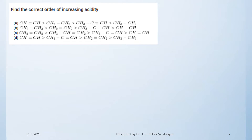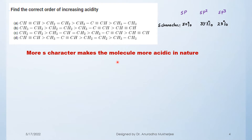The third problem asks to find the correct order of increasing acidity, with four options given. Here we explain the question based on hybridization. For sp, the S character is 50%; for sp2, it is 33.3%; and for sp3, it is 25%. More S character makes the molecule more acidic in nature.